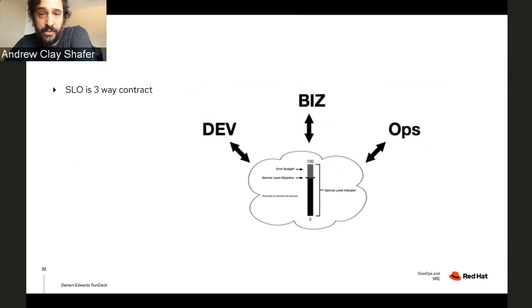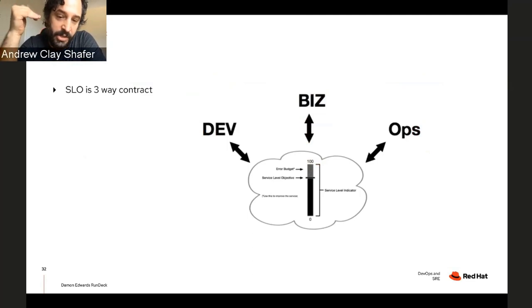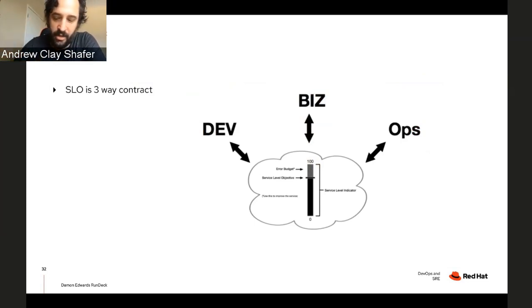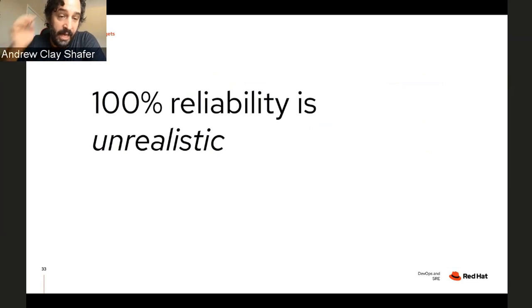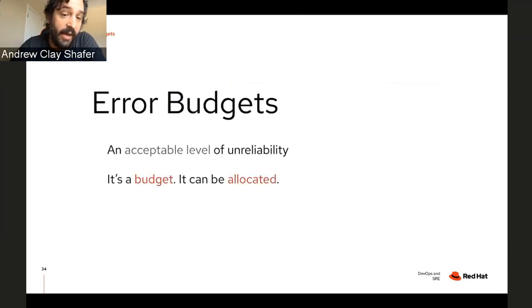The SLO is really a three-way contract between developers, the business, and operations. The business is saying reliability is important — if the thing isn't available, it's not delivering value. Developers are pushing code. Operations is responsible for reliability. That establishes the service level objective, which gives you an error budget. One hundred percent reliability is not realistic — I'd argue it's actually impossible. As you define your nines, you establish an acceptable level of unreliability, which for some things might be minutes or seconds.